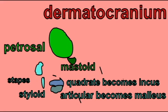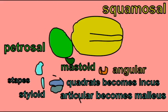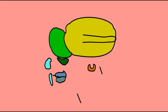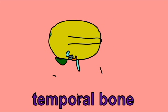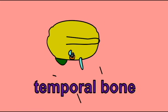The chondrocranium, which developed later, included the prootic, epiotic, and sphenotic regions, which would ultimately become the petrosal portion of the temporal bone.